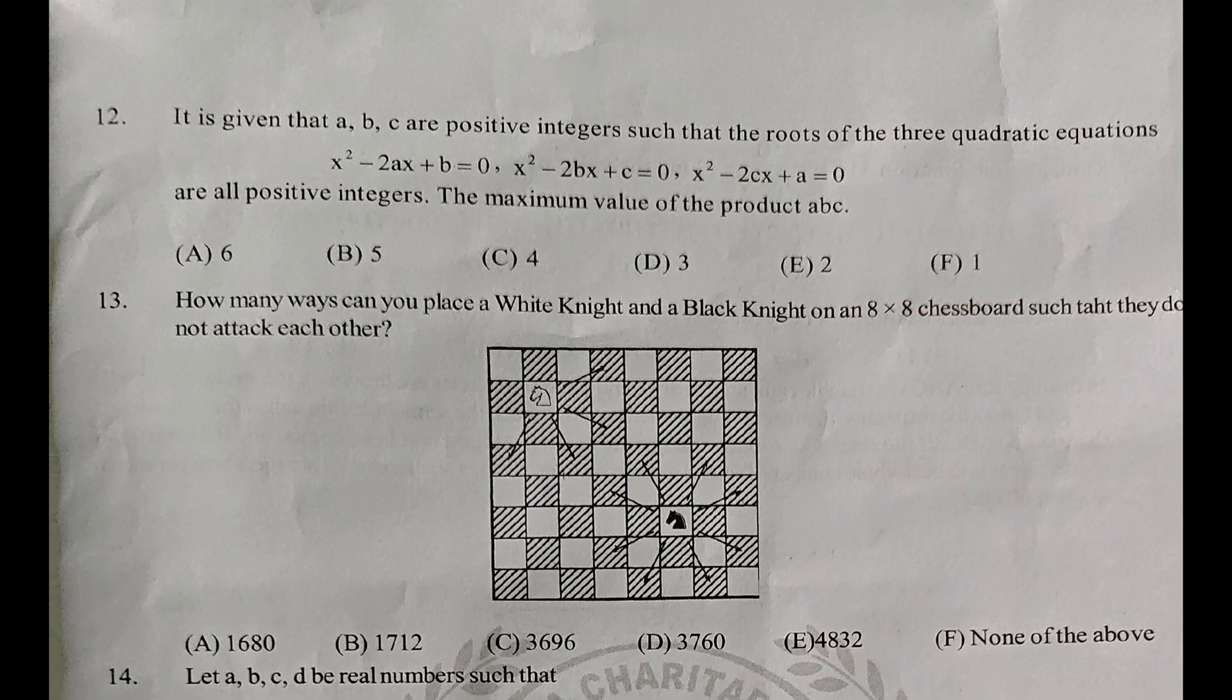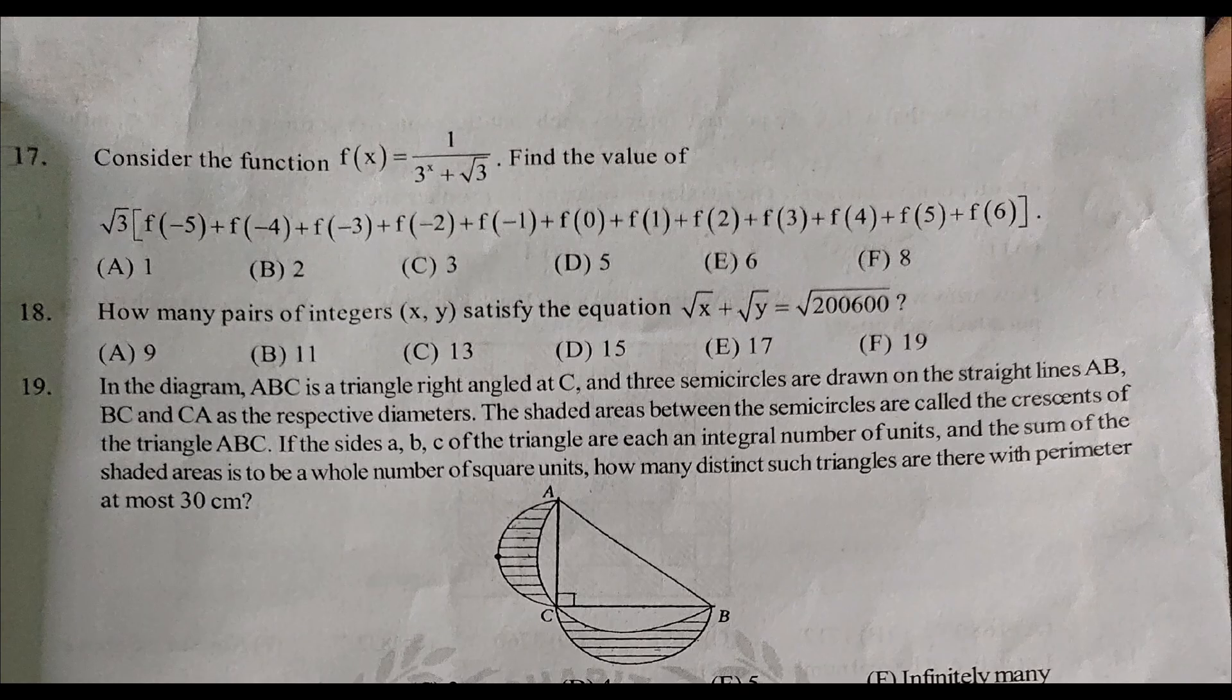How many ways can you place a white knight and a black knight on an 8x8 chessboard such that they do not attack each other? The answer is C, 3696.